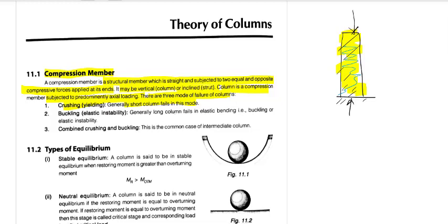The next mode is buckling. Buckling is an elastic instability. Generally long columns fail in elastic bending — buckling or elastic instability. When the column buckles like this, part of it deflects sideways. This type of failure is known as buckling, caused by local instability. Generally long columns experience this.